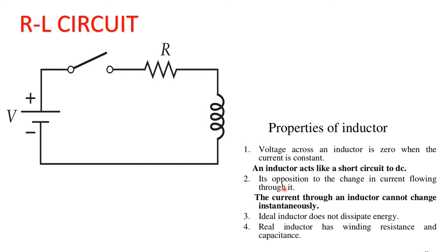The current through an inductor cannot change instantaneously. This applies to both instantaneous voltage and instantaneous current.